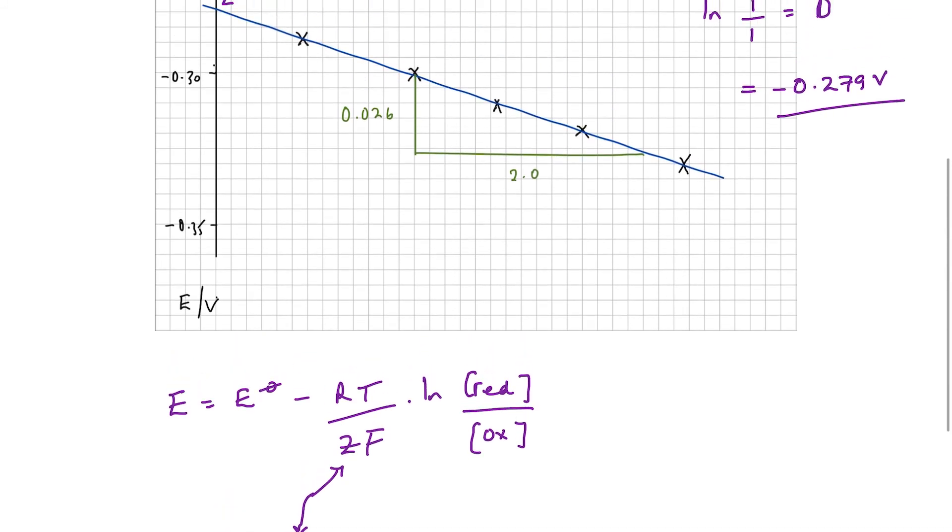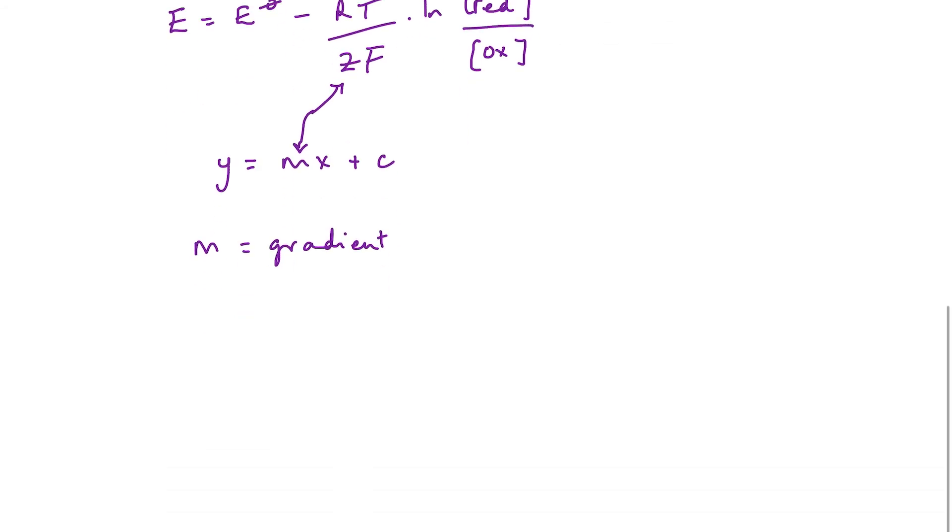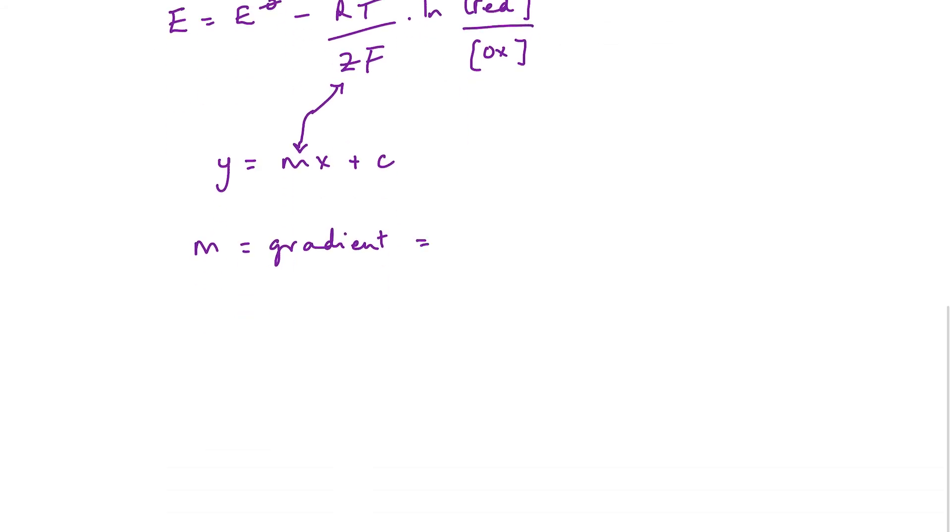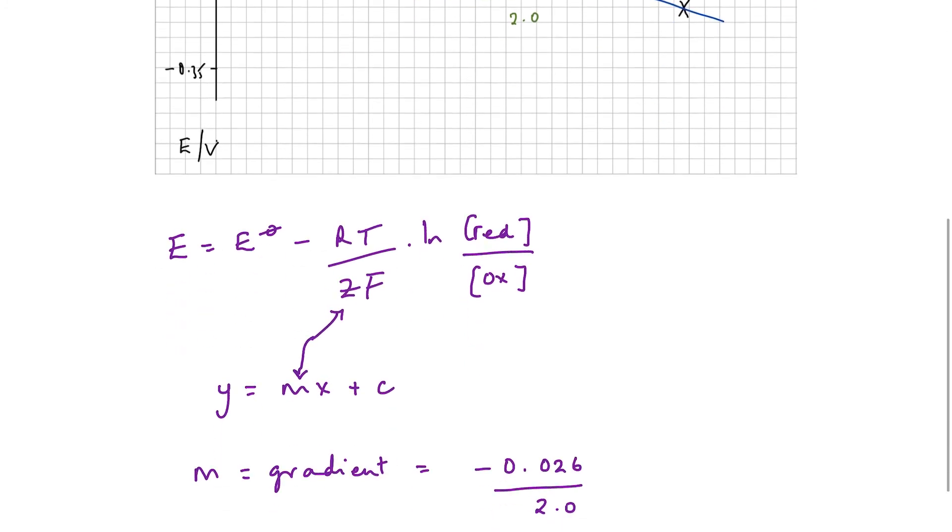So I have worked out the gradient on my graph. What—m, the gradient? Give myself a little bit more space. Is equal to, what have we got here, minus 0.026 divided by 2.0? Okay, negative because our slope's going downwards, not upwards. Does that make sense? It does to me. So the gradient is equal to minus 0.013.